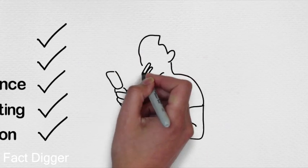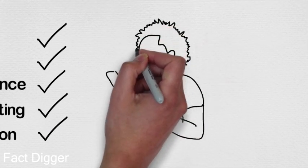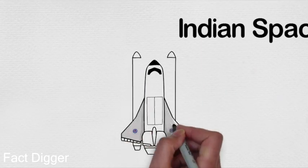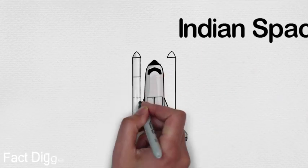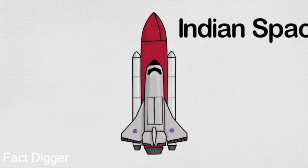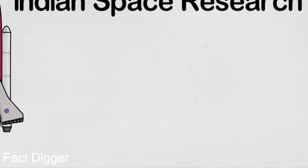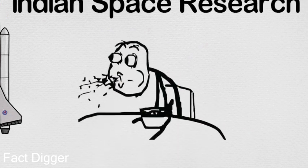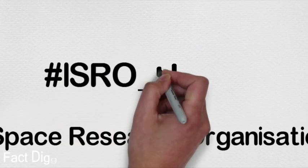But ISRO created history in the field of space research on the morning of 15th February 2017, by launching more than 100 satellites successfully with the help of a single PSLV, the Polar Satellite Launch Vehicle. ISRO literally shocked the world with the completion of this audacious mission. Today's video is all about the history of ISRO.